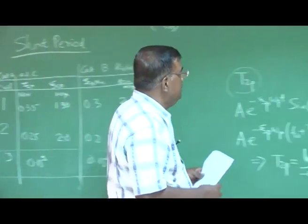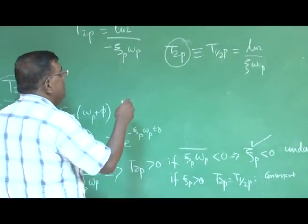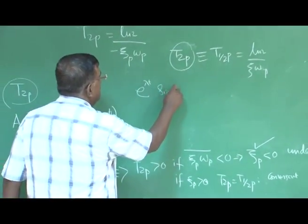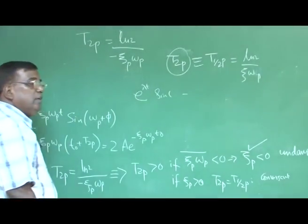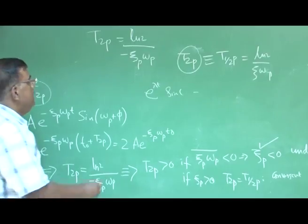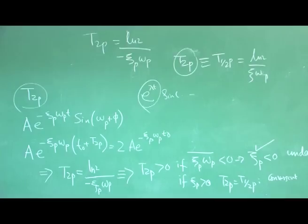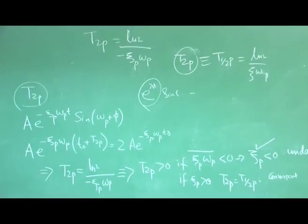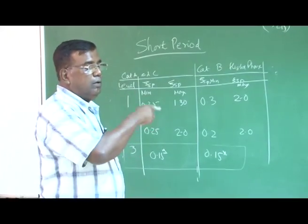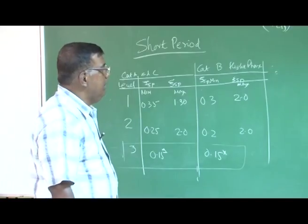In dynamics, whenever we write the response as e^(λt) multiplied by a sinusoidal component, the exponential term decides the amplitude envelope and whether the response diverges or converges. That is why zeta plays such an important role.